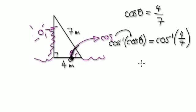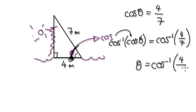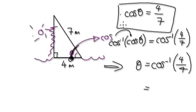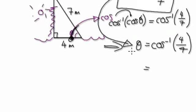It's just a matter of punching it into a calculator now. In the next example, rather than writing all the steps out, inside your mind you're going to inverse cos both sides and jump straight to the result. You'll see what I mean in the next one.